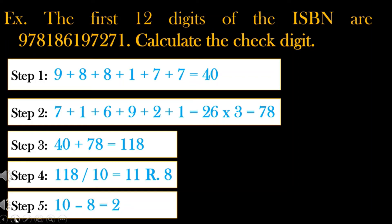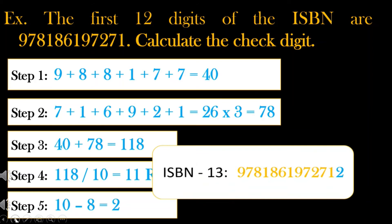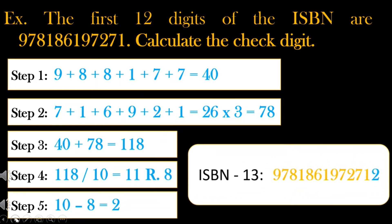The correct ISBN 13 number will be 9, 7, 8, 1, 8, 6, 1, 9, 7, 2, 7, 1, 2.